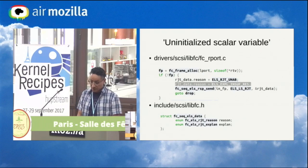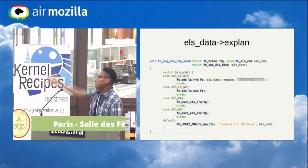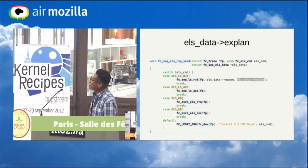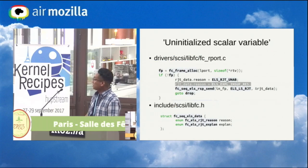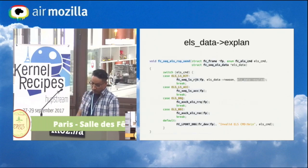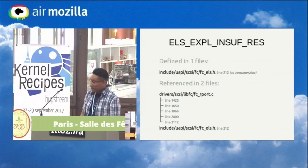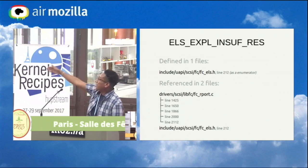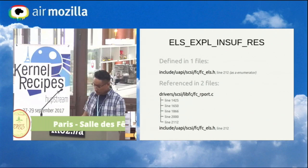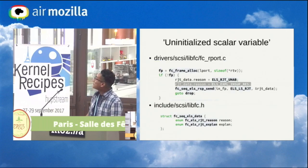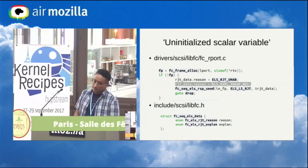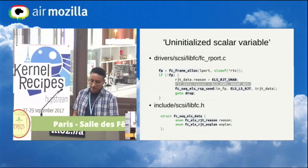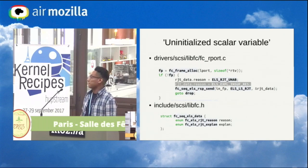The next thing I did was look at the function. I found that the 'expand' field of this structure was being used in the previous code, but no value was being assigned to it. I continued looking and searched for all references to this constant. In the highlighted code, this constant is being assigned to the 'reason' field. It became almost obvious that the original intention was to assign this constant to the 'expand' field instead.